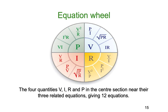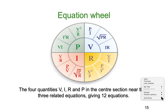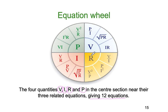So that's our Ohm's Law equation wheel. The four quantities are voltage (V), current (I), resistance (R), and power (P). The Ohm's Law wheel gives us 12 equations in total: three for voltage, three for resistance, three for current, and three for power.